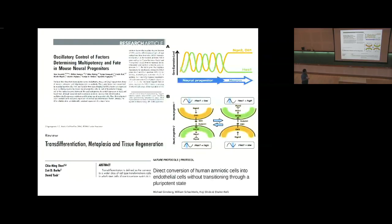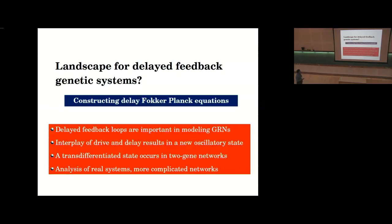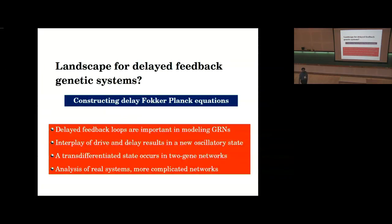Ongoing work involves constructing a landscape analogous to Wang's, which requires solving delay Fokker-Planck equations for stochastic equations with delays — highly nonlinear due to the feedback terms. In conclusion: when modeling gene regulatory networks, delayed feedback loops are important; the interplay of drive and delay can result in new oscillatory states; in two-gene networks, trans-differentiation emerges, which has been seen biologically; and ideally one would look at real biological networks to see the implications of such delayed feedback.